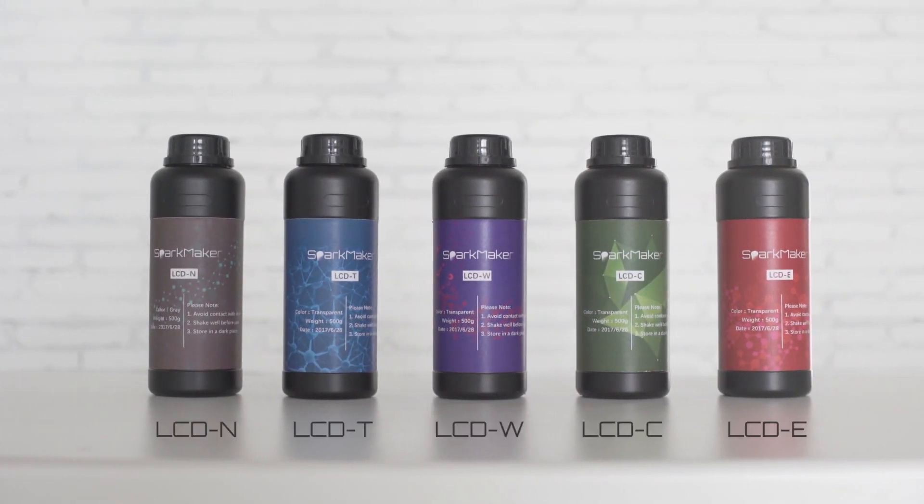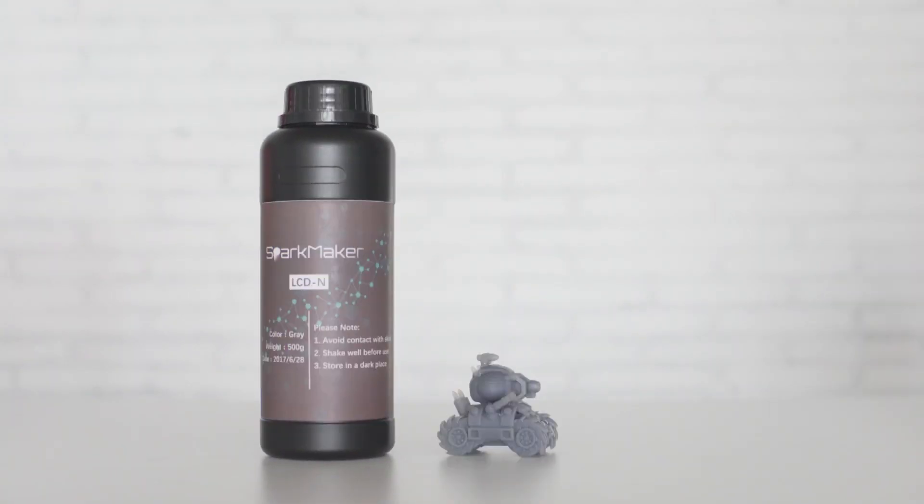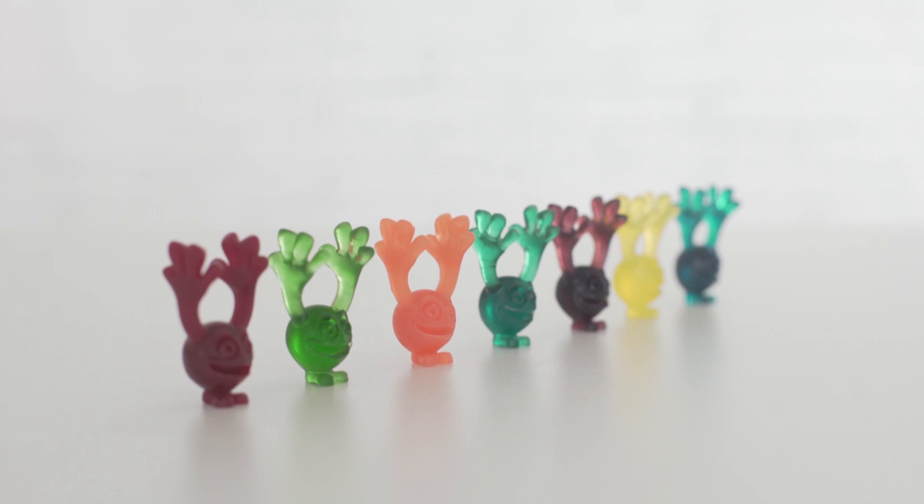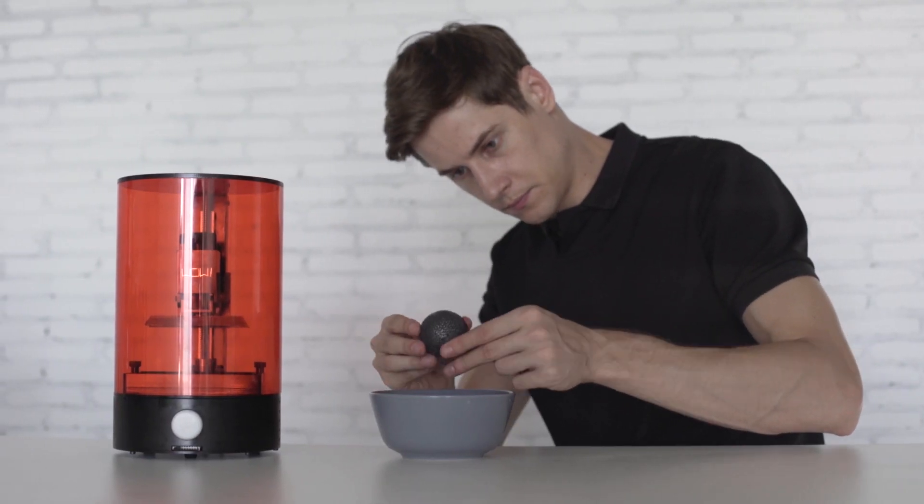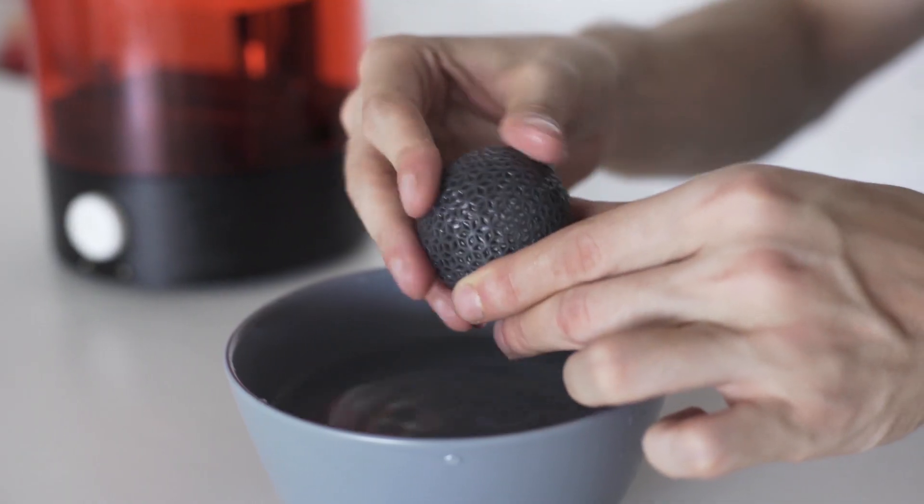SparkMaker comes with five types of resins for different objects you want to create. If you don't want to get messy with typical resins, we also provide a special resin that can be cleaned with water directly.